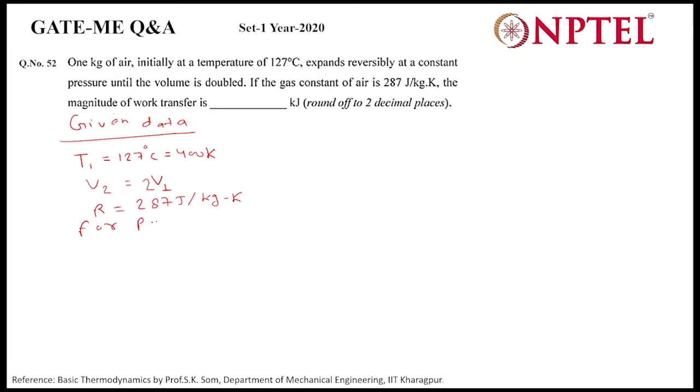For P is equal to constant, we know that temperature is directly proportional to volume. So T2 by T1 is equal to V2 by V1.